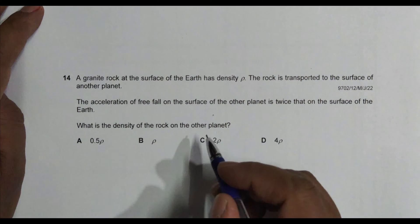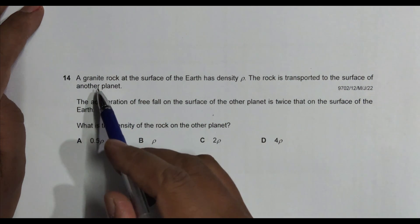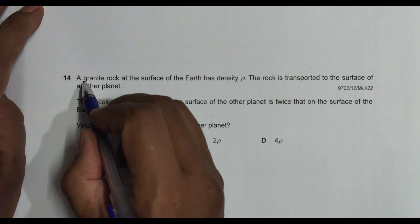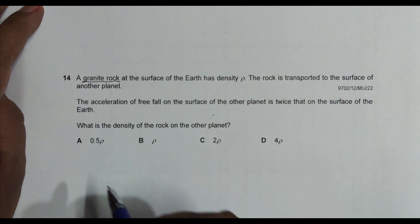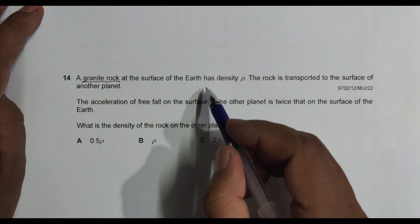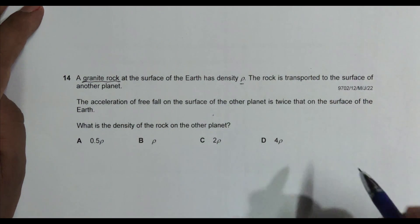But I found that it's a very easy question, a straightforward question. It says a granite rock, so it means that the type of rock has been specified at the surface of Earth, has density ρ.